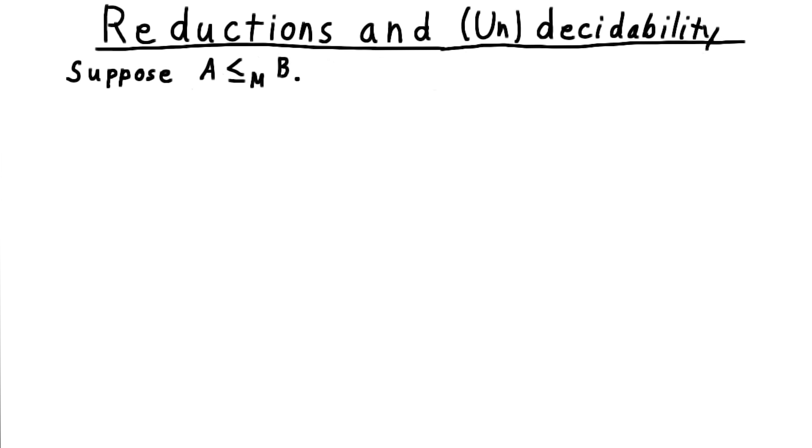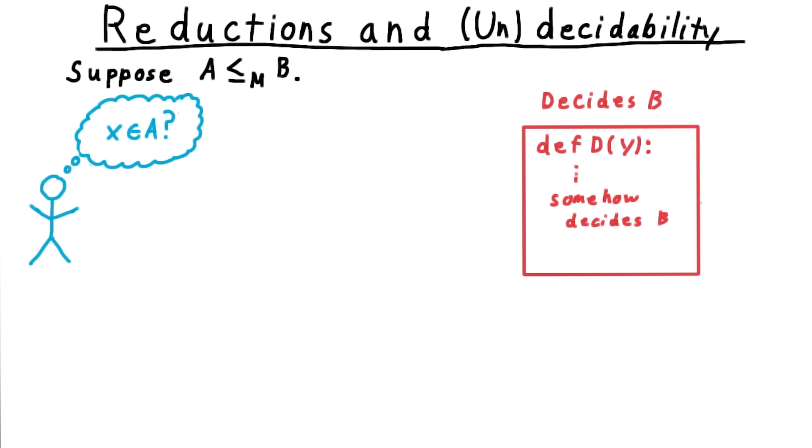Suppose that we have a language A that's reducible to B. And let's say that I want to know whether some string X is in the language A. Well, if there's a decider for B, then I'm in luck.